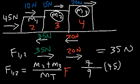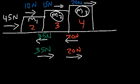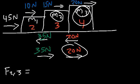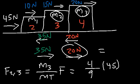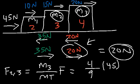Now let's calculate the other contact force. The force exerted by block 2 on block 3 only pushes block 3 to the right. So that's the mass of block 3 divided by the total mass times the applied force — 4 over 9 times 45. 45 divided by 9 is 5, and 5 times 4 is 20. So now you know how to find the contact force if you know the masses and the applied force.